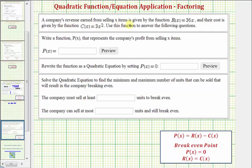The company's revenue earned from selling x items is given by the function R(x) = 36x, and their cost is given by the function C(x) = 3x². We want to write the function P(x) that represents the company's profit from selling x items.